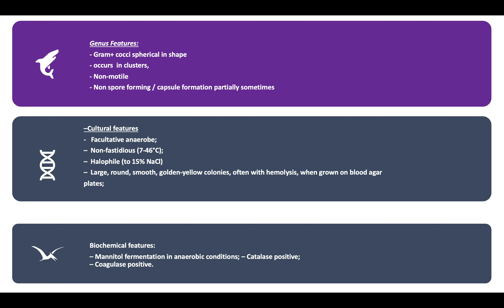The cultural features include: they're facultative anaerobes, meaning they grow best in anaerobic conditions. They're non-fastidious, meaning they're not fussy and can grow across various temperature ranges. They're halophiles, meaning they can still grow under sodium chloride or alkaline conditions. They form large, round colonies, and the main takeaway is they form golden yellow colonies, often with hemolysis, when grown on blood agar.